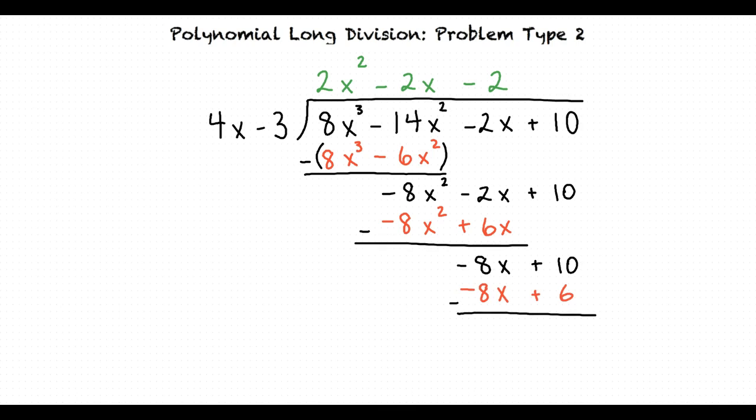Negative 8x minus negative 8x equals 0 and 10 minus 6 equals 4. The degree of the bottom expression 4 is 0. This is less than the degree of 4x minus 3 which is 1. This means we are done with the division.